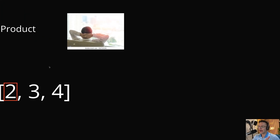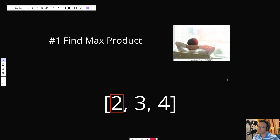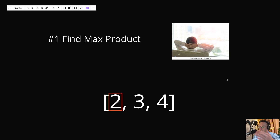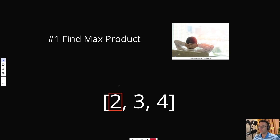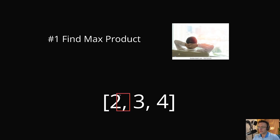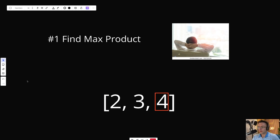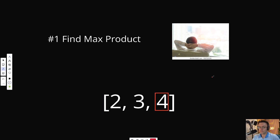Hands off the wheel — I'm doing all the work today. We're going to find the Maximum Product Subarray of a set of positive numbers that are gently increasing. This is as easy as it gets. If you want to find the Maximum Product Subarray of these three numbers, you literally just multiply them one by one: 2 times 3 is 6, 6 times 4 is 24. The Maximum Product Subarray is 24. That's not so bad.